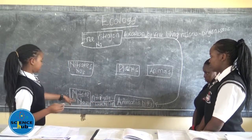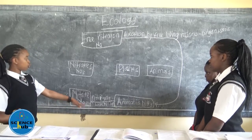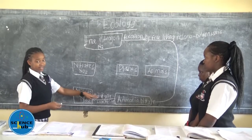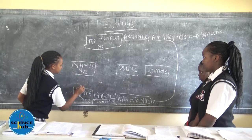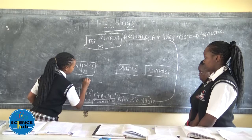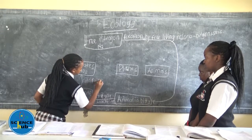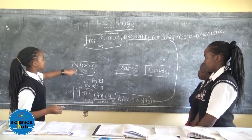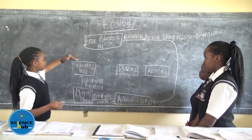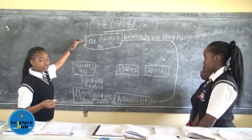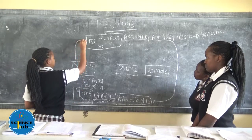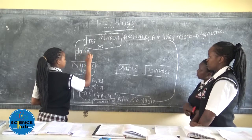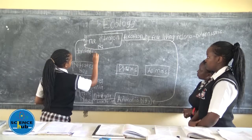This is the nitrifying bacteria. As you can see, nitrite is NO2 and nitrate is NO3. When nitrite changes into nitrate, it is also done by nitrifying bacteria. So from nitrite to nitrate, it is also nitrifying bacteria. Then from the nitrates, it goes back to free nitrogen — that process is also done by nitrifying bacteria, because it returns to square one.